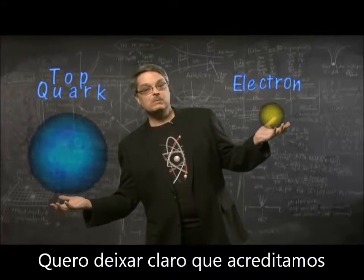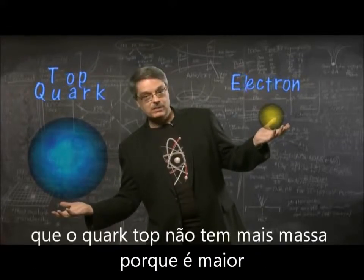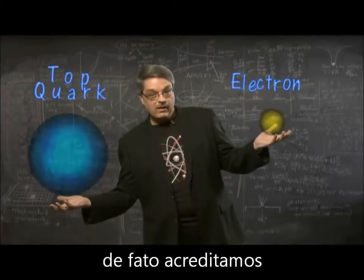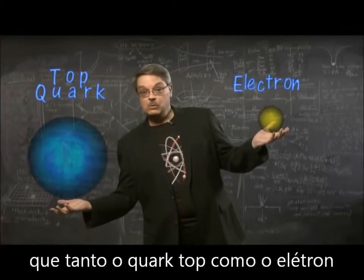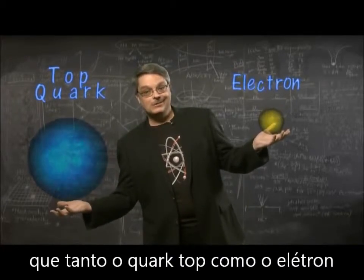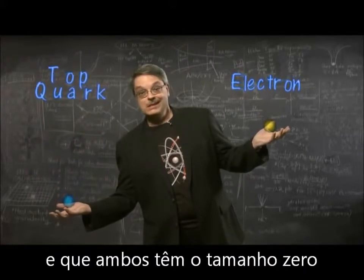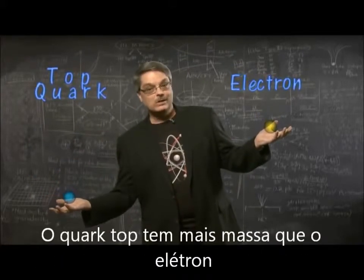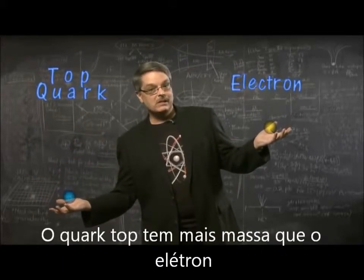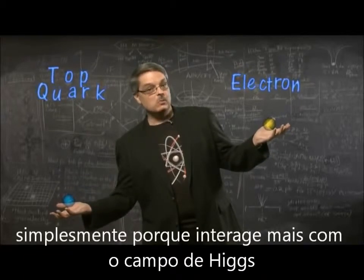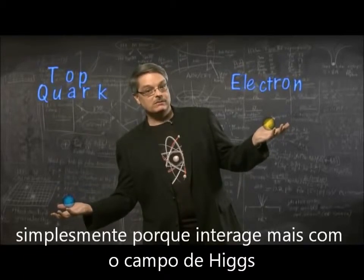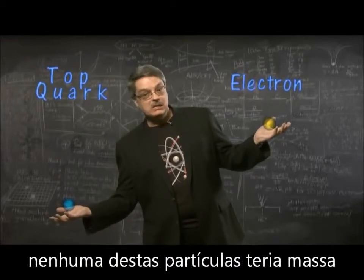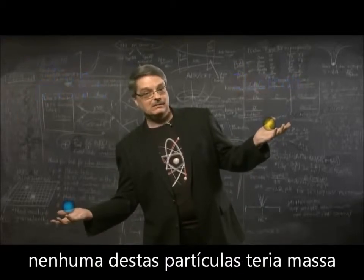I'd like to stress that we believe the top quark is not more massive because it's bigger. It's not. In fact, we believe that both the top quark and the electron are exactly the same size. Indeed, they both have zero size. The top quark is more massive than the electron simply because it interacts more with the Higgs field. Actually, if the Higgs field didn't exist, neither of these particles would have any mass at all.